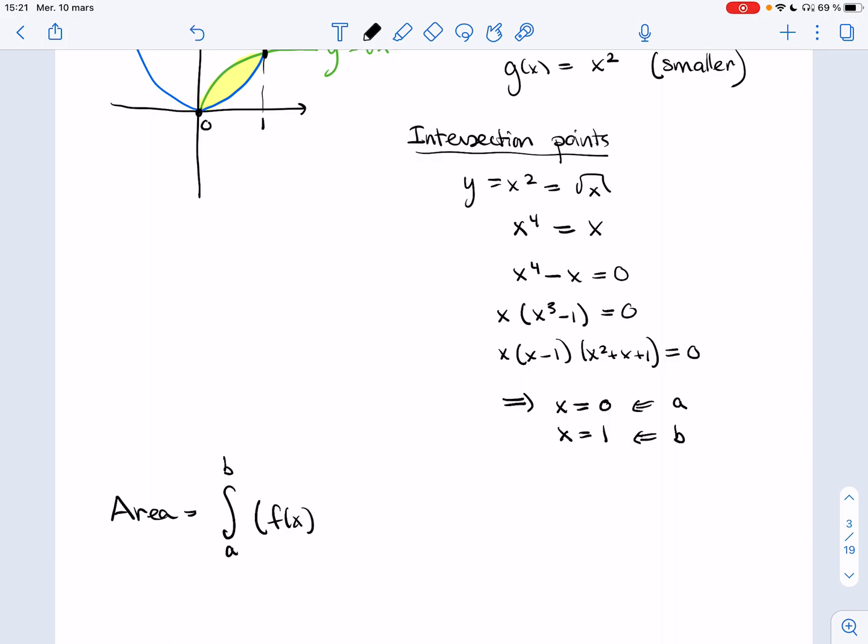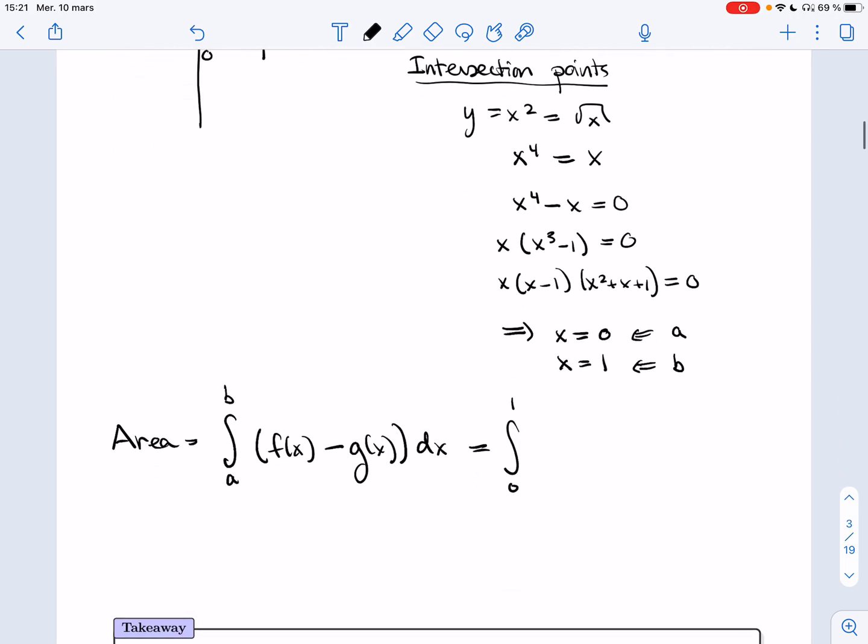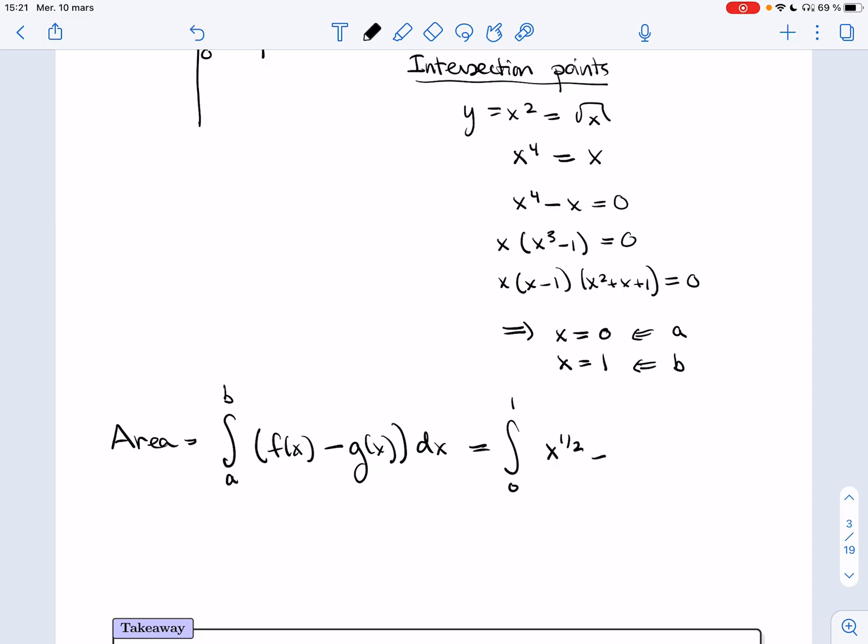So the area is equal to the integral from A to B, F of x minus g of x. So that's the integral from zero to one. F we said was the root. And g is x squared.